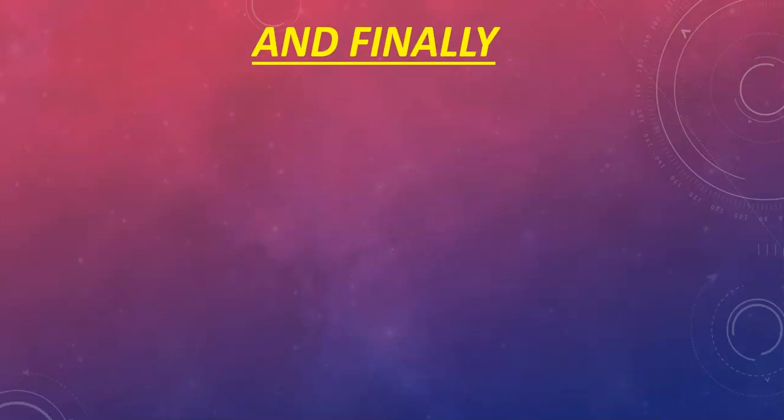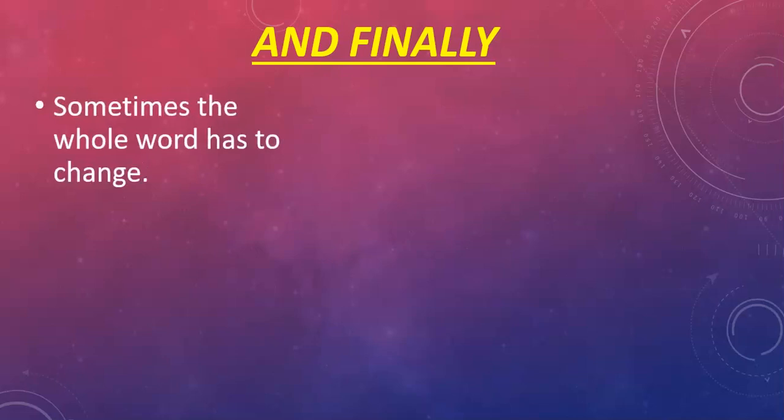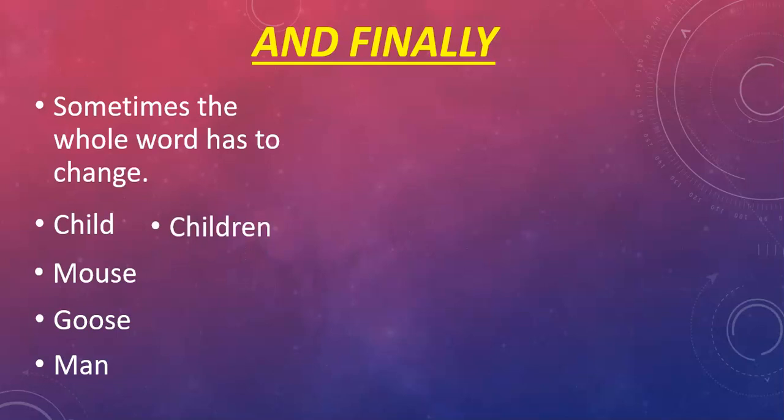And finally, sometimes the whole word has to change. Child, mouse, goose, man, these are all examples where the word has to change completely. You wouldn't say one child, two childs. You would say one child, two children. There are never three mouses. There are three mice. Goose becomes geese and man becomes men.